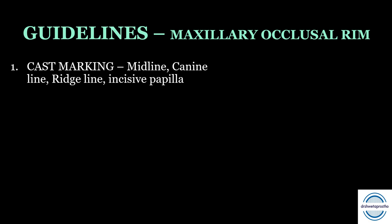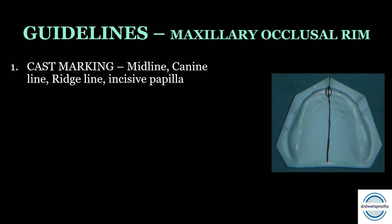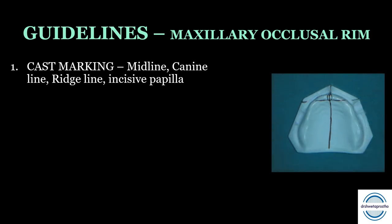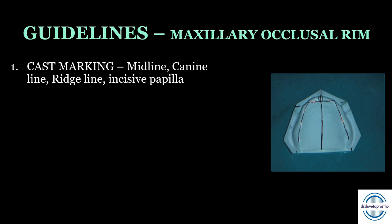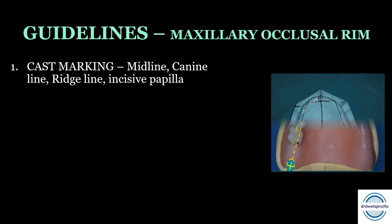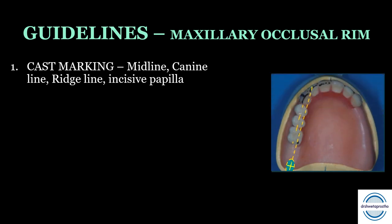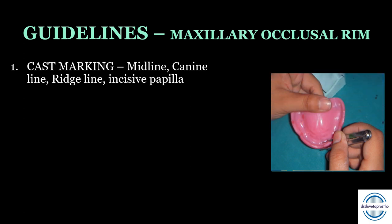Now let us discuss guidelines for fabricating the maxillary occlusal rims. First is cast marking: we need to draw reference lines to help fabricate the maxillary occlusal rim. These include the midline, which bisects the incisive papilla; the canine line, which passes posterior to the incisive papilla and marks the position of the canines; the ridge line, which bisects the major portion of the ridge; and the incisive papilla marking, as incisors are usually 7 to 8 millimeters anterior to it.